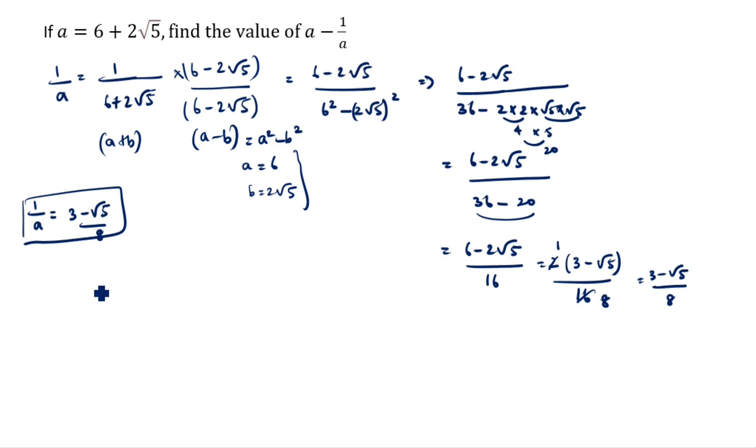Now we will solve. So a is 6 plus 2 root 5 minus of bracket 3 minus root 5 by 8.